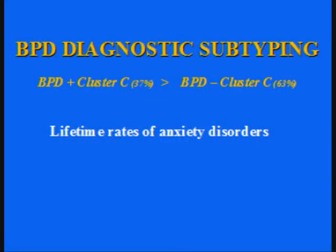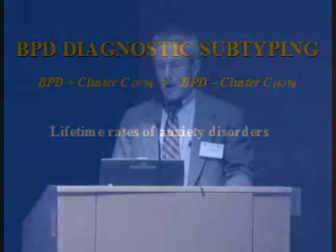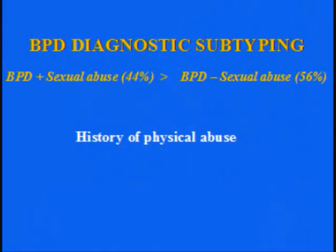When we subtype them based on cluster C — the anxious, fearful group — not surprisingly, they have higher rates of anxiety disorders, but again no other correlates for other symptom issues. When we look at subtyping on the basis of childhood sexual abuse, about 44% meet criteria for that. This is self-report, so rates are probably higher, but these are what individuals told us. The only correlate we found was that they also had a history of physical abuse, so not much help in understanding symptom or severity differences in this sample of substance abusers.